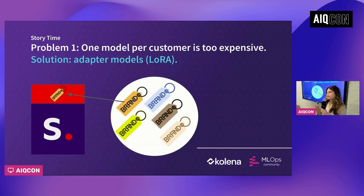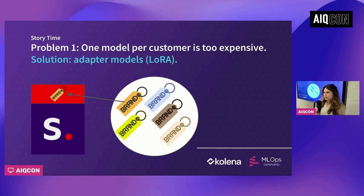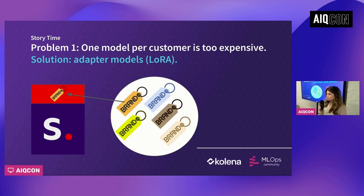The way fine-tuning is done today, both in language and in image, is through adapter modules. These are additional weights that you put on top of your base model. Because their size is much smaller than the base model, this leads to faster training and requires less data — you don't need 5 million data points to train an adapter model. During inference, the increase in latency is pretty minimal. Most importantly, during serving, these adapter modules are very convenient: if you have 100 customers, you can serve them with a single GPU. You host stable diffusion on one GPU, and then depending on the incoming query, you just swap the adapter module in and out. Instead of needing 100 GPUs, you just need one.